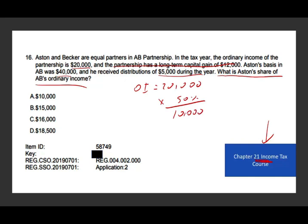Why don't we tax the distribution of $5,000? The distribution is assumed to be coming from ordinary income — from the profit — so it's already taxed. Austin's ordinary income share is $10,000; therefore, the answer is A. These types of questions are very common on the CPA exam, so you want to make sure you are familiar with such scenarios.